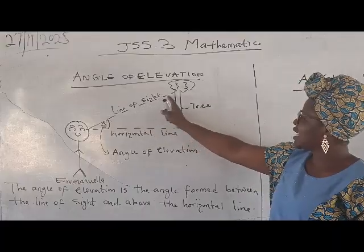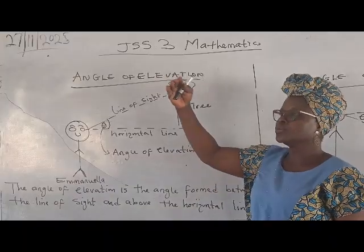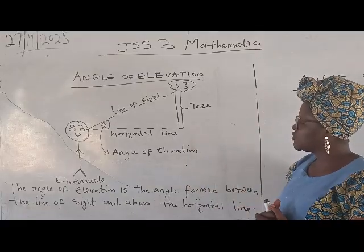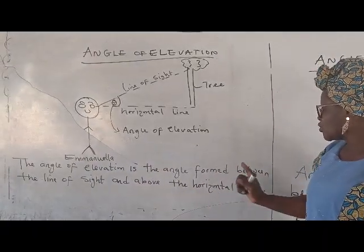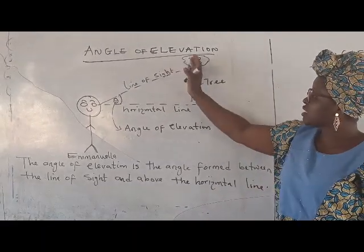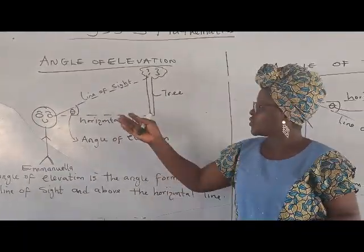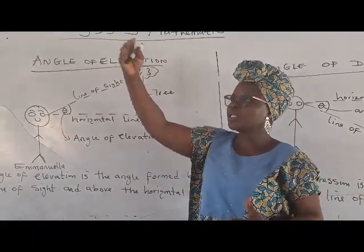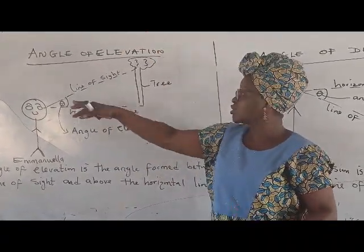This line we call the line of sight, while this is the horizontal line, and this is the object she viewed. By way of definition, the angle of elevation is the angle formed between the line of sight and above the horizontal line. We have many examples of how an angle of elevation is formed on a daily basis. For instance, if an airplane is passing and I choose to look up to see it, the angle formed is what is called the angle of elevation.